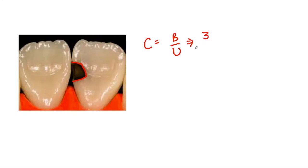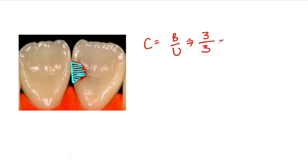Now if we look at the unbonded surfaces, the surface of the composite restoration forming the palatal surface will be unbonded — that is the first unbonded surface. The surface forming opposite to the palatal wall, that is the labial surface, will be another unbonded surface. And the composite restoration forming the mesial surface will be the third unbonded surface.